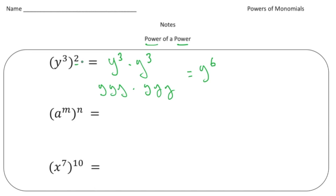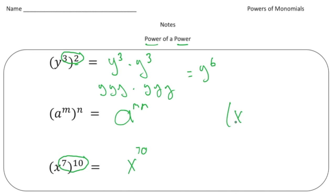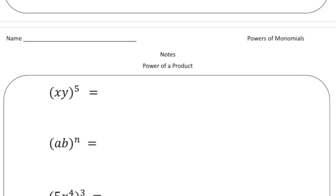When you have a power to a power, the rule is you multiply the two powers together. So if we have a to the m, to the nth power, that's just a to the m·n power. For example, x to the seventh to the tenth power gives us x to the 70th power. And x to the 20th to the fifth power gives us x to the 100th power.